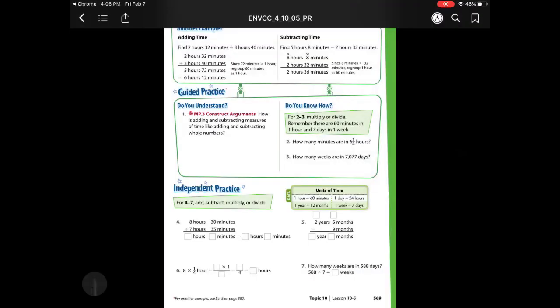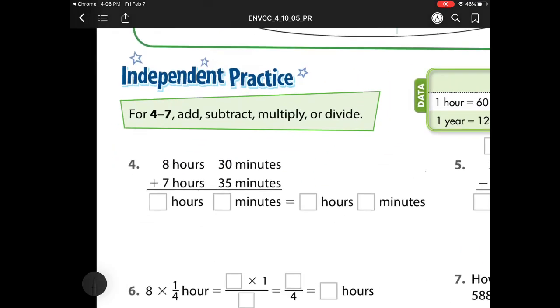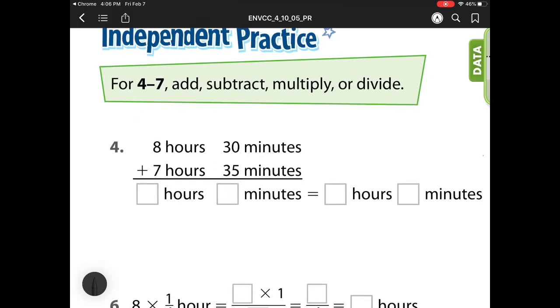Alright, so like always, we're on lesson 10-5, which is working with time, and we've already done the guided practice in class, so we'll get started on our independent practice. Remember, our key thing is that 60 minutes is equal to 1 hour, and remember that multiplication is always the number of groups times the size of the groups.